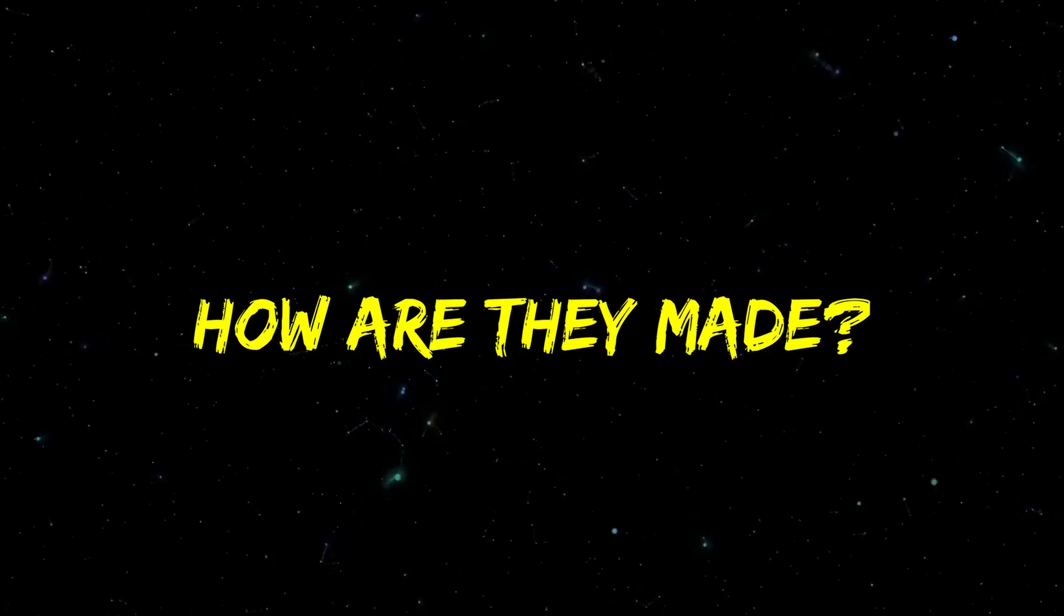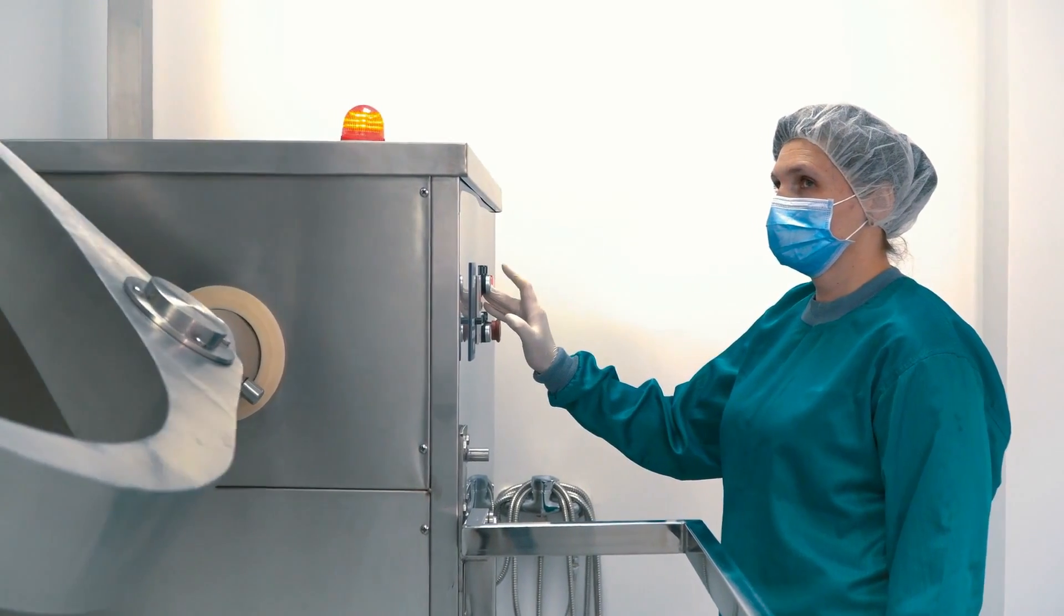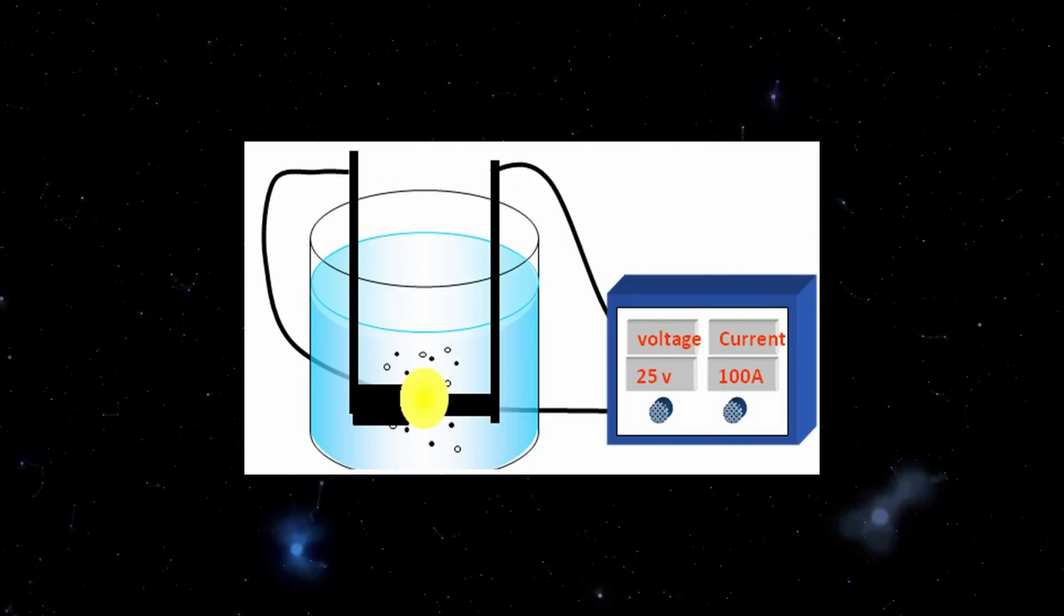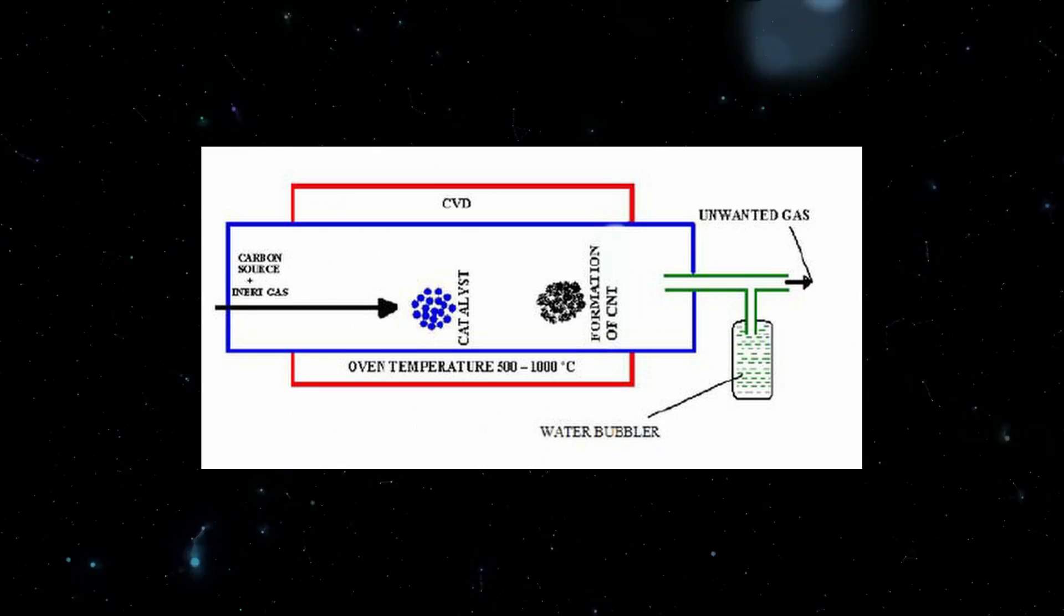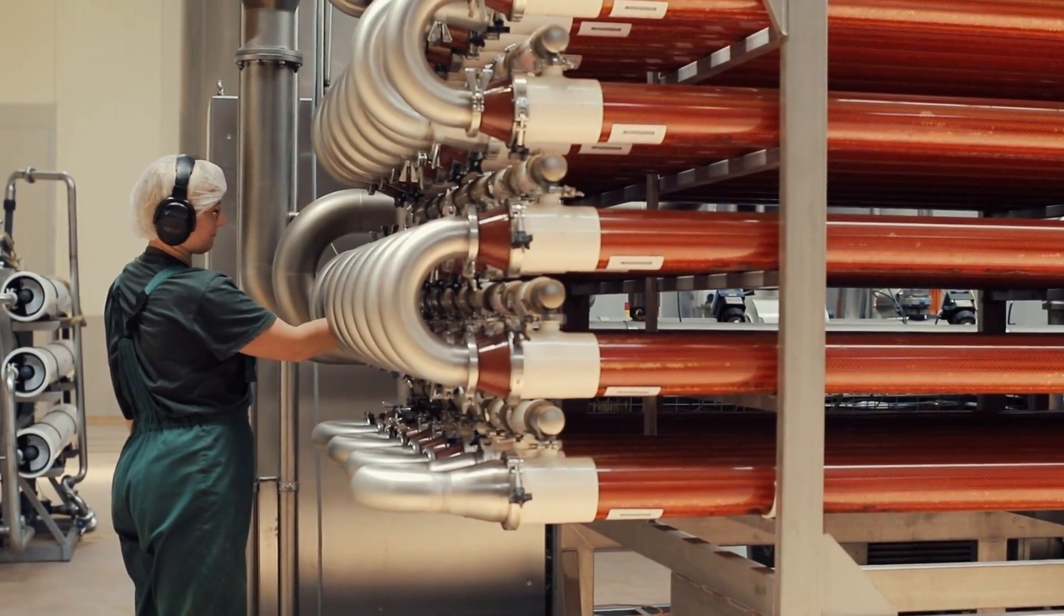How are they made? Currently, there are four methods of producing carbon nanotubes. These methods are arc discharge, laser ablation, chemical vapor deposition, and high pressure carbon monoxide disproportiation.